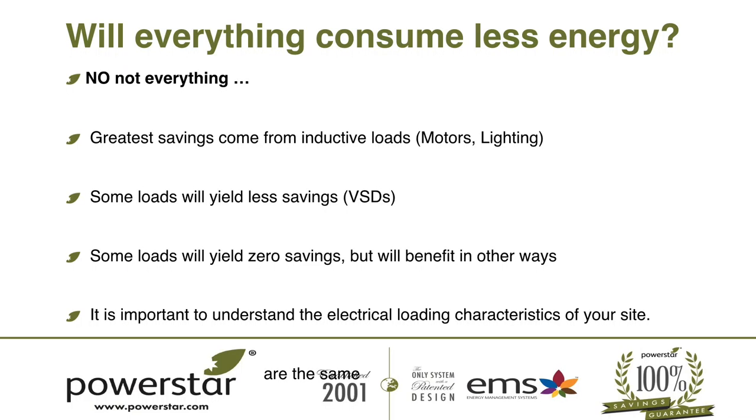We can guarantee our proposal to our clients. Some sites don't get savings where the voltage is already at 225, 220, or 228 volts, so the opportunity is minimal. But there is equipment that gives very good savings: electric motors and induction loads give very good savings, and resistive loads running 24/7 without a thermostat give very good savings — though those are few and far between.